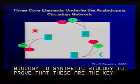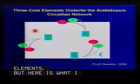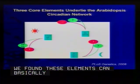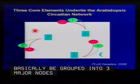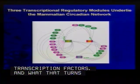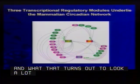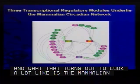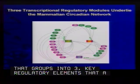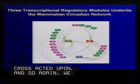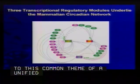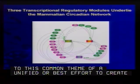What we found is that these elements can basically be grouped into three major nodes that are cross-regulated by different transcription factors. And what that turns out to look a lot like is the mammalian circadian clock, which also groups into three key regulatory elements that are cross-acted upon. Again, we're coming back to this common theme of a unified or best-effort optimal architecture, but using different proteins.